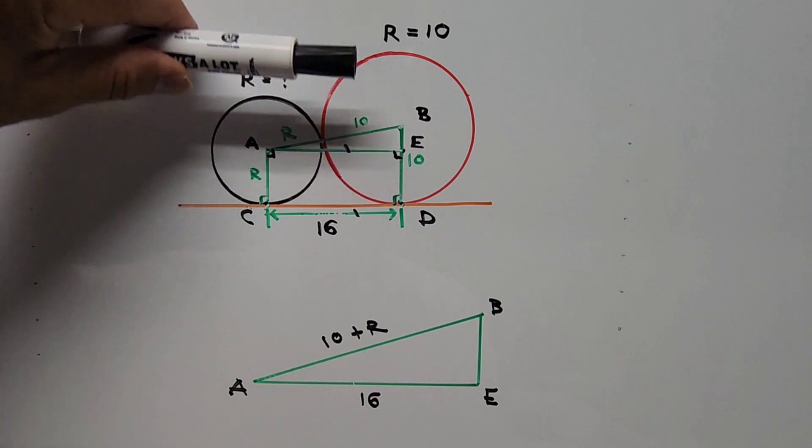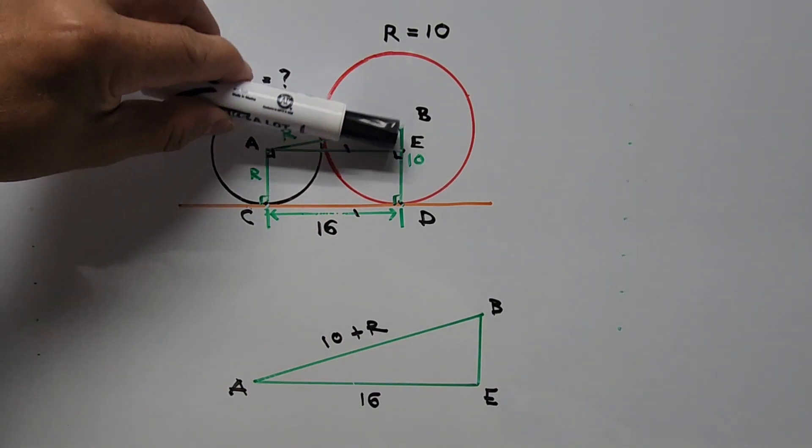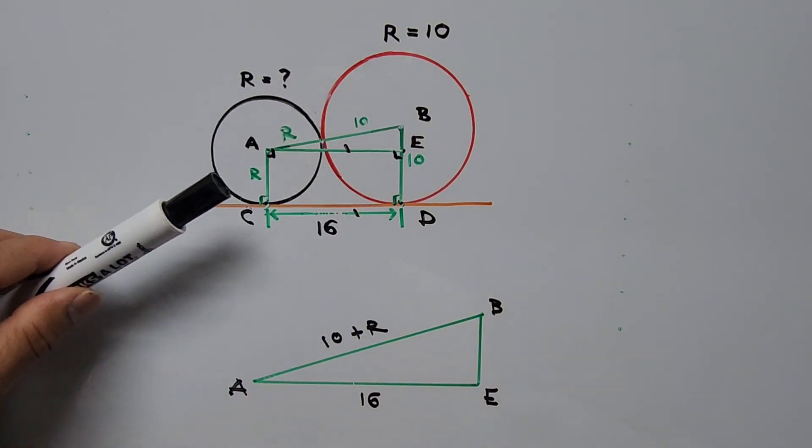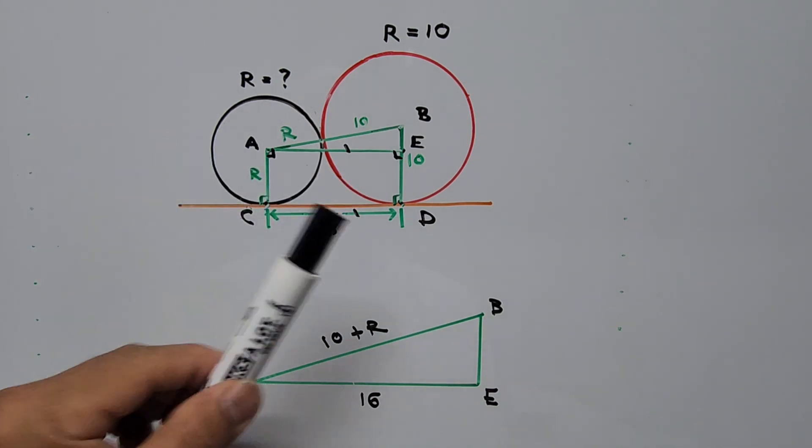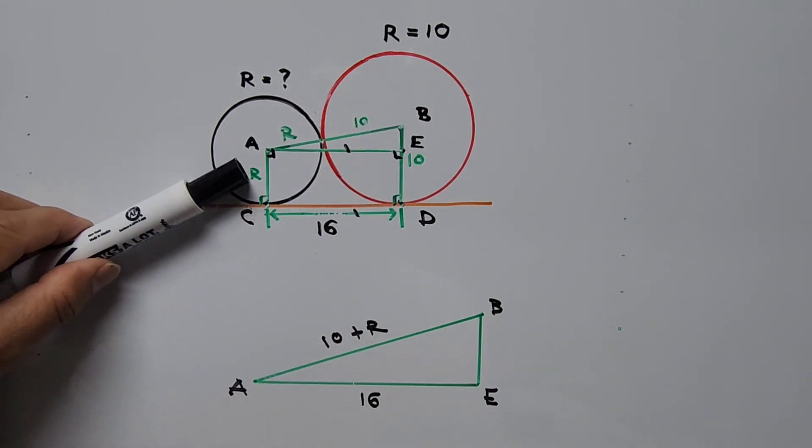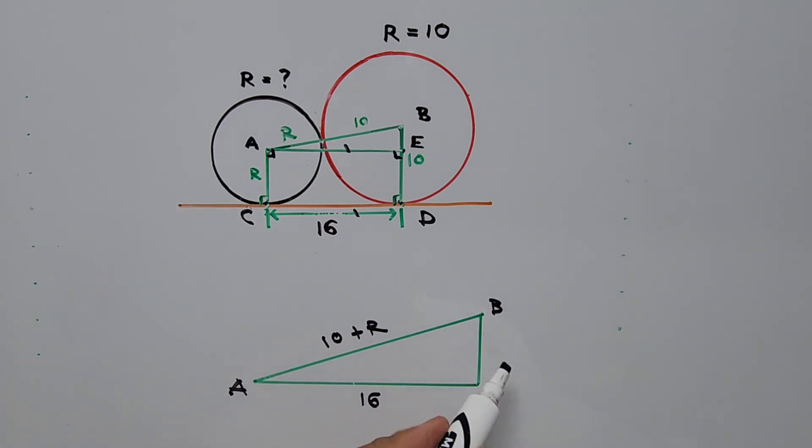Side BE is the difference between the radius of the bigger and smaller circle. So this is 10 minus R. And since this is a right triangle, that means this angle right here is 90 degrees.